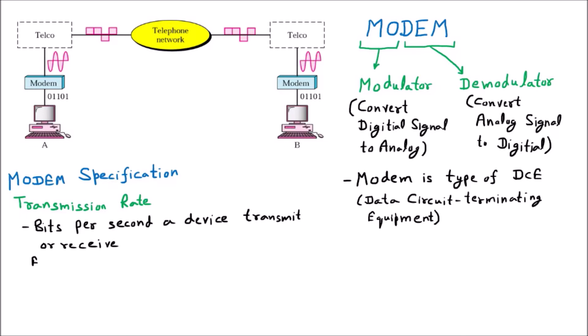There are examples by which we can describe transmission rate — we can say it is high speed or low speed. For example, 2 bits per second would be considered a low transmission rate. The next specification is modem speed, which refers to what the modem is modulating — whether it operates on amplitude, frequency, or phase.